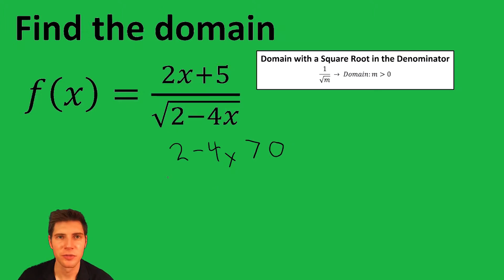And then you just solve for x. Minus 2, minus 2. Negative 4x is greater than negative 2, and then you divide both sides by negative 4.